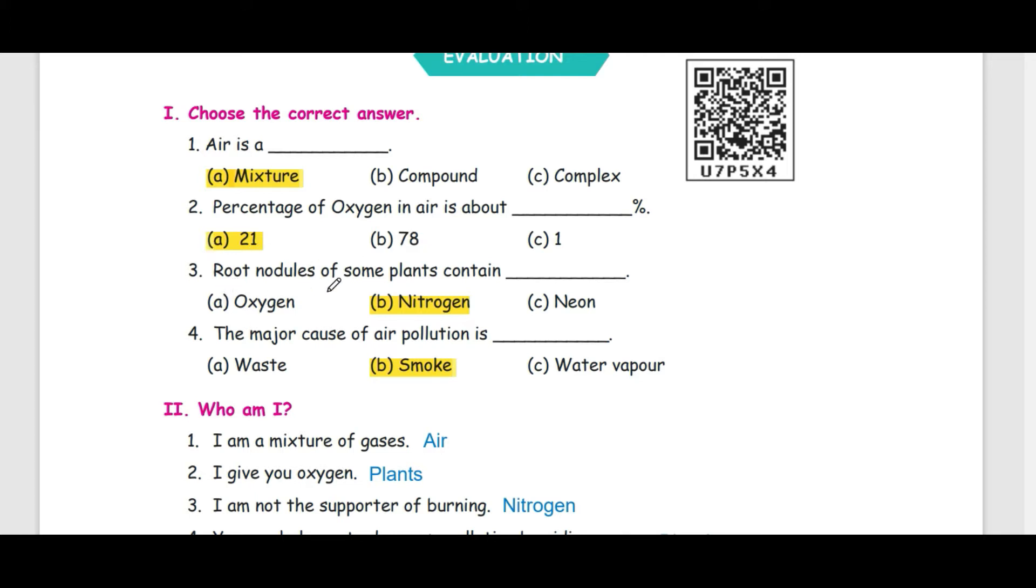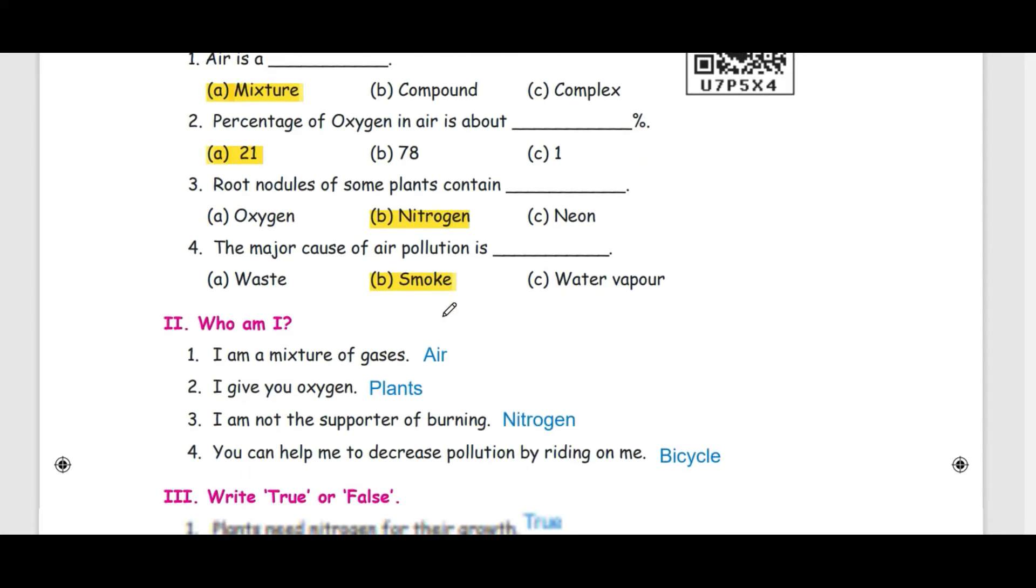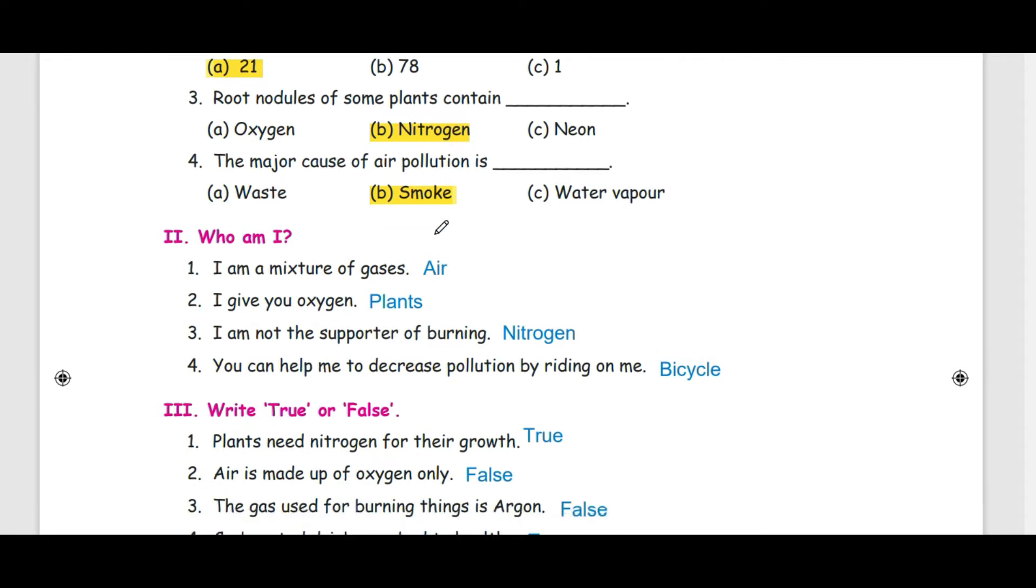Root nodules of some plants contain nitrogen. The major cause of air pollution is smoke. Smoke is very important for this air pollution.